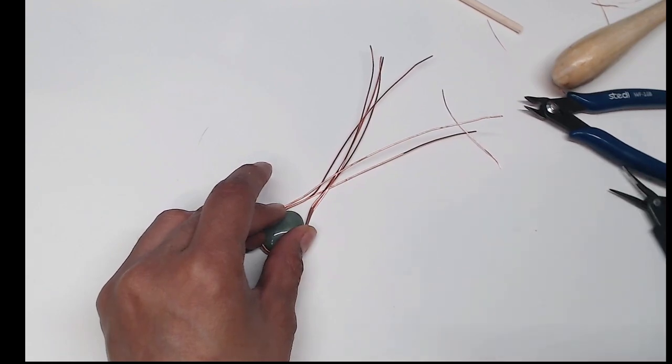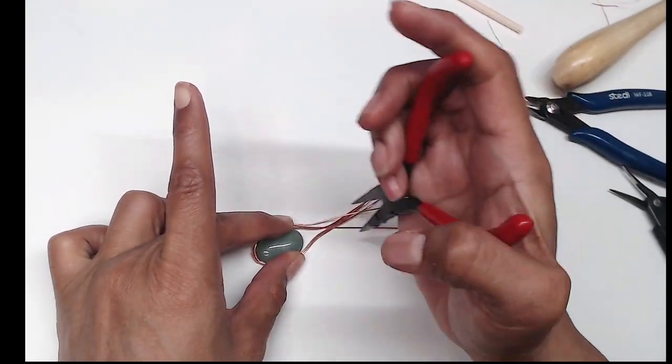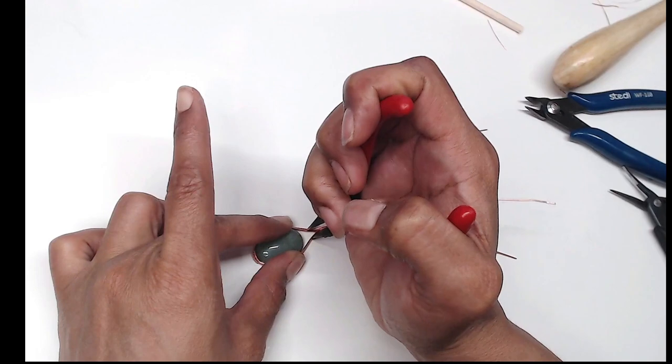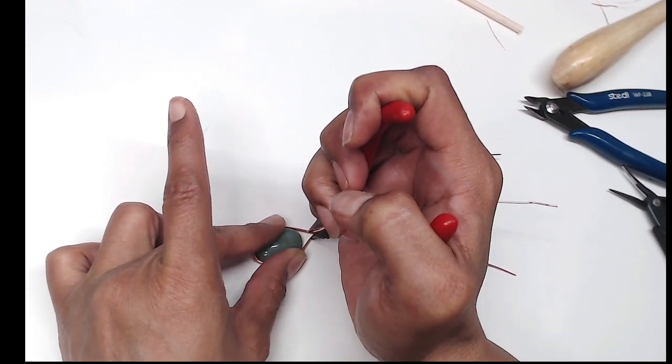But when you're happy, grab one of your pliers, make sure you're centered up and clamp all the wires together, and this will create your bail.